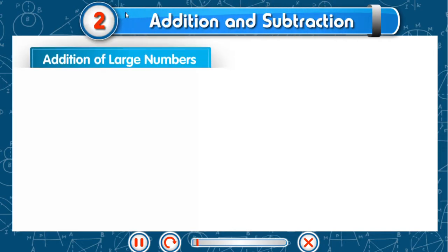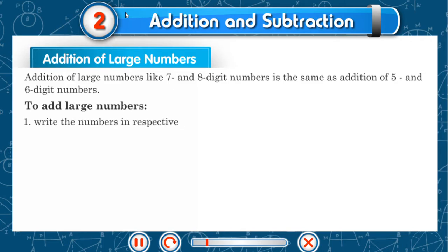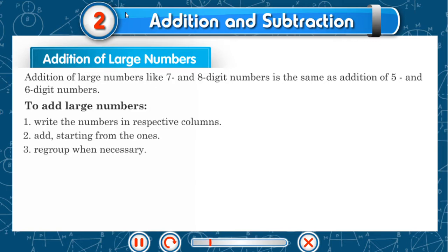Chapter 2: Addition and Subtraction. Addition of large numbers — like 7 and 8 digit numbers — is the same as addition of 5 and 6 digit numbers. To add large numbers, write the numbers in respective columns. Add starting from the ones. Regroup when necessary.